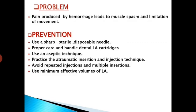Problems faced by patients during trismus include pain produced by hemorrhage, which leads to muscle spasm and limitation of movement. Prevention: use a sharp sterile disposable needle, practice proper care and handling of dental local anesthesia cartridges, use an aseptic technique, practice atraumatic insertion and injection technique, avoid repeated injection and multiple insertions, and use minimum effective volumes of local anesthesia.